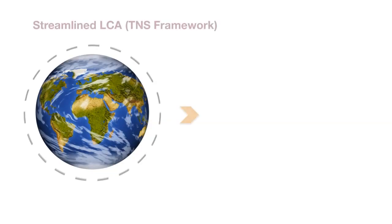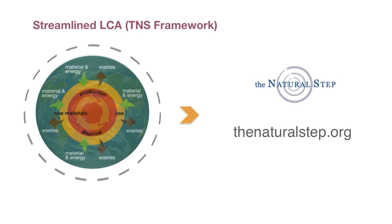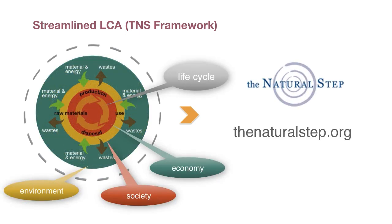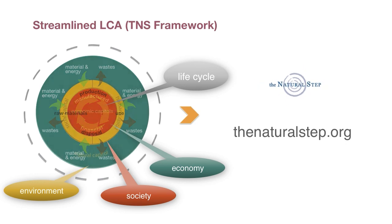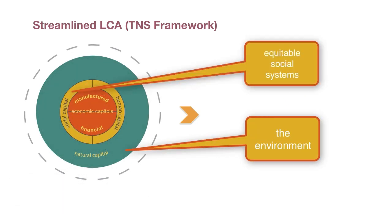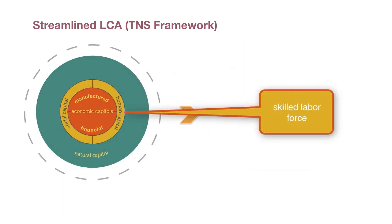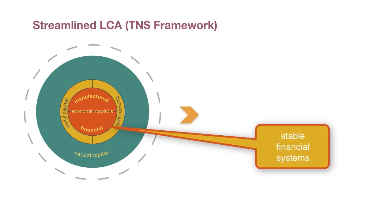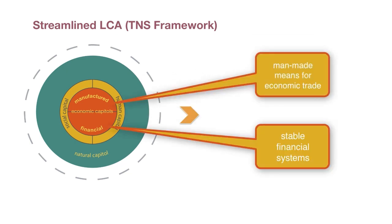A shortened process is the practice of streamline LCA developed by the Natural Step. The Natural Step framework identifies types of capital: natural capital, social capital, human capital, and economic capitals, which are financial and manufactured.